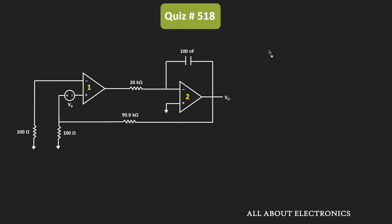For the first op-amp, V- — the voltage at the inverting terminal — will be equal to 0V. On the other end, if we see the voltage at V+ or the positive terminal, then that is equal to minus Vx plus Vy, where Vy is the voltage at this node.